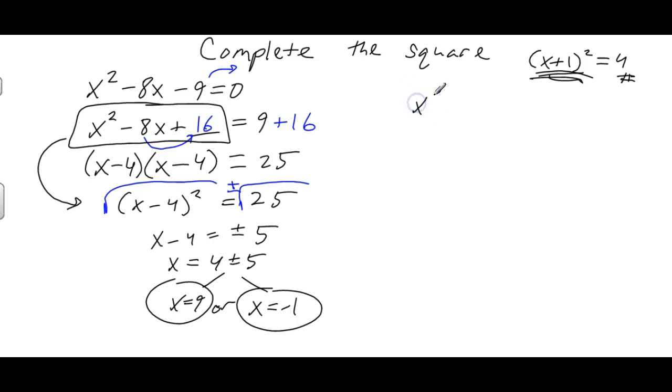We could have solved this pretty quickly just by factoring. This guy factored really nicely. It would have been much faster in this case. You've got 9 and 1, the bigger number is negative here, so minus and plus. You get x equals negative 1 or x equals positive 9, and you've done it a lot quicker. But factoring only works on some problems. It doesn't work on all problems.